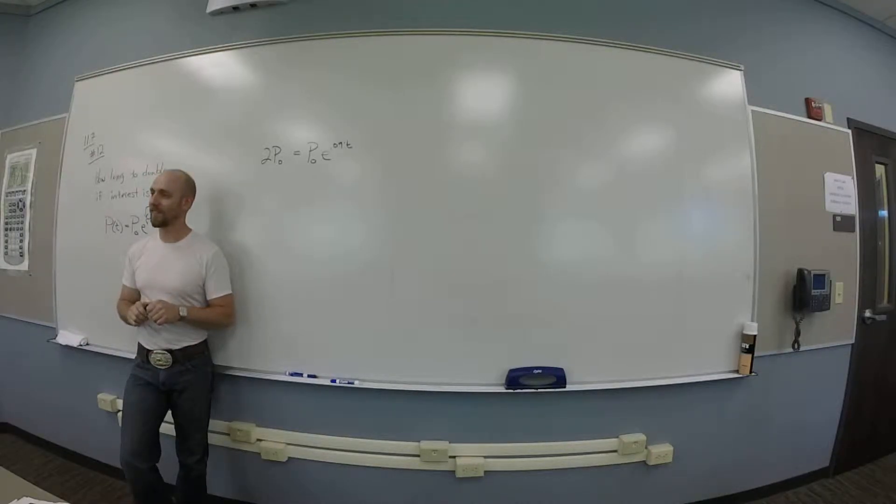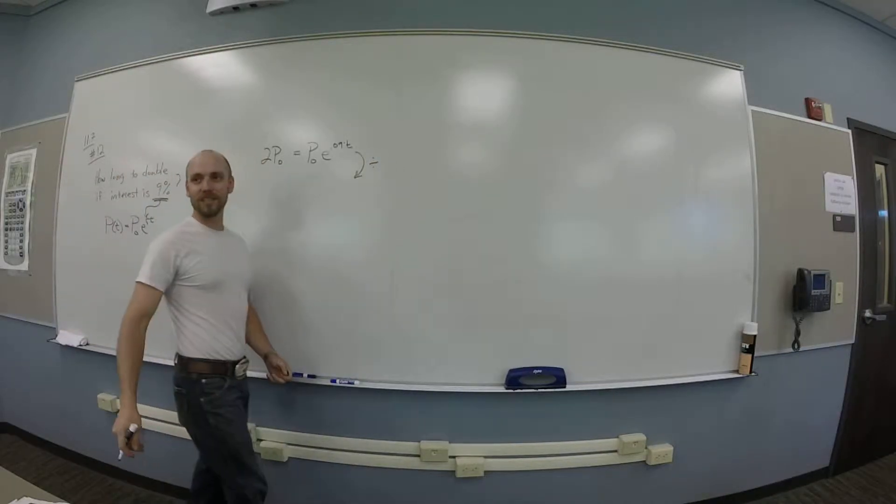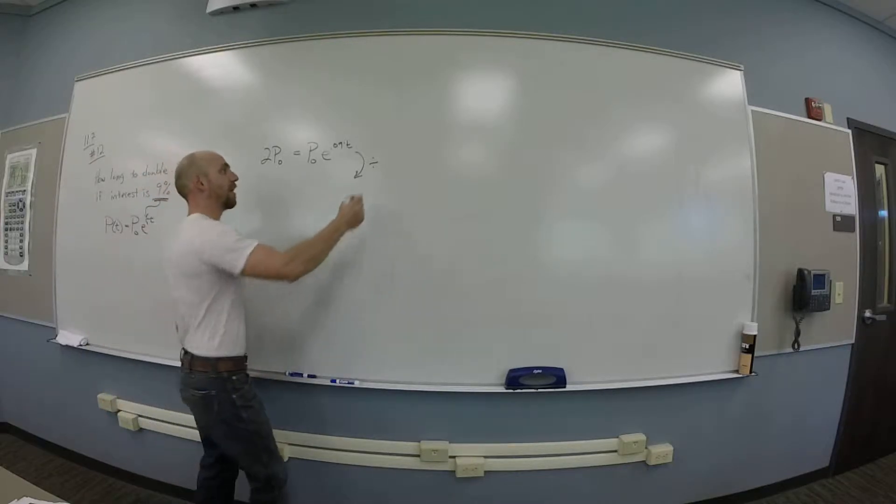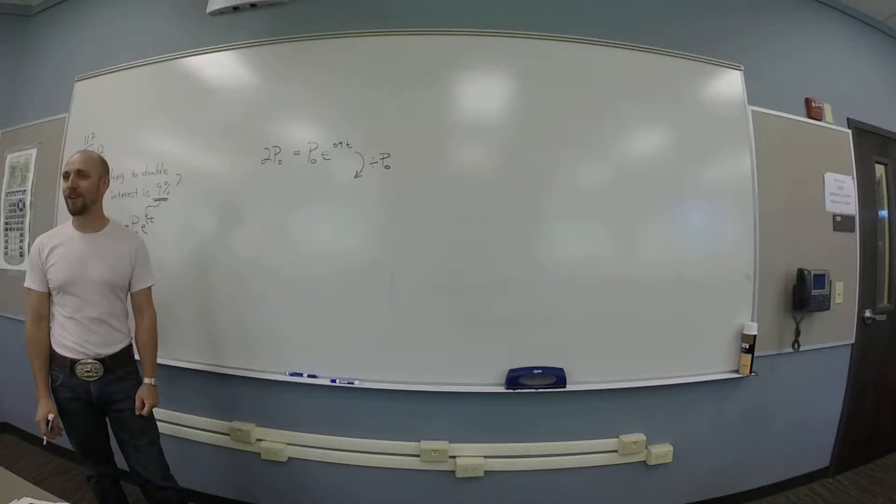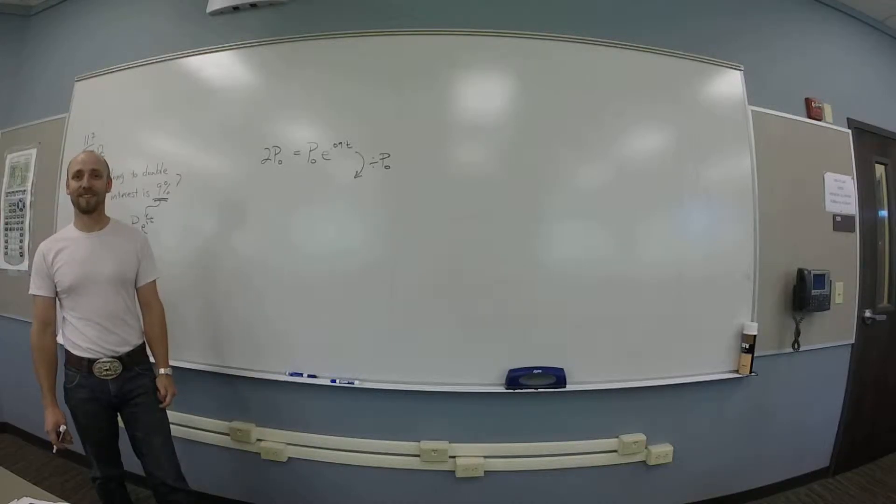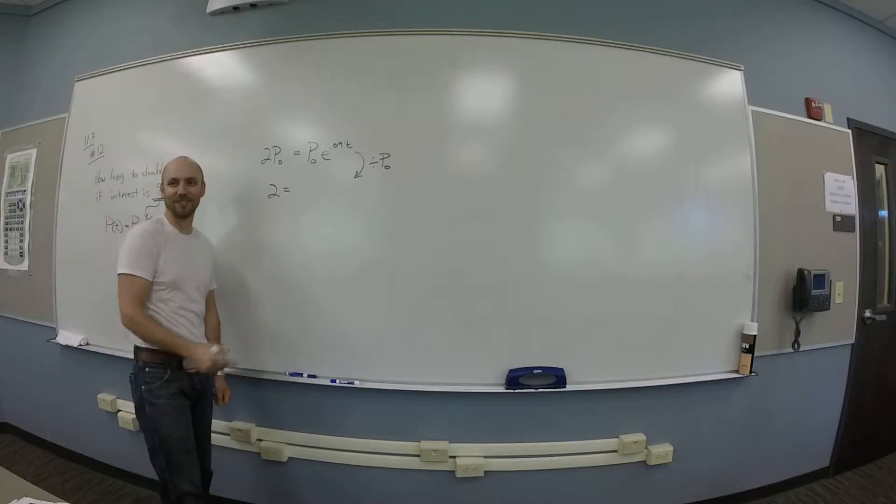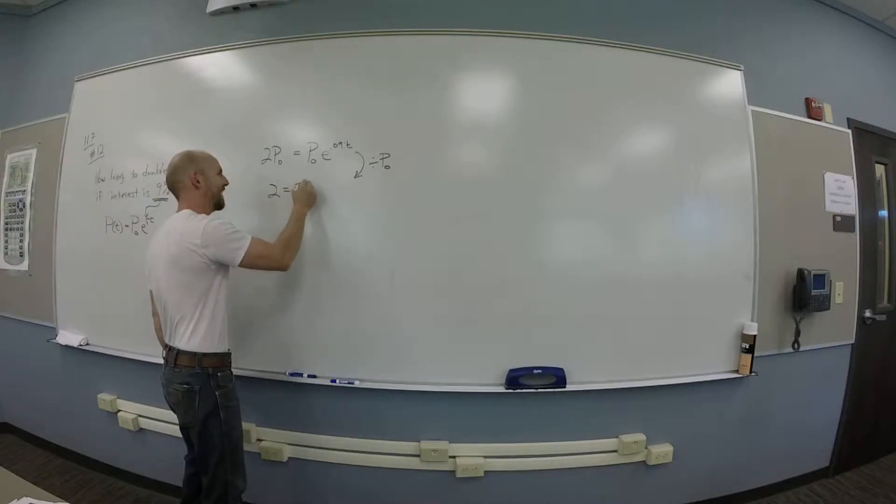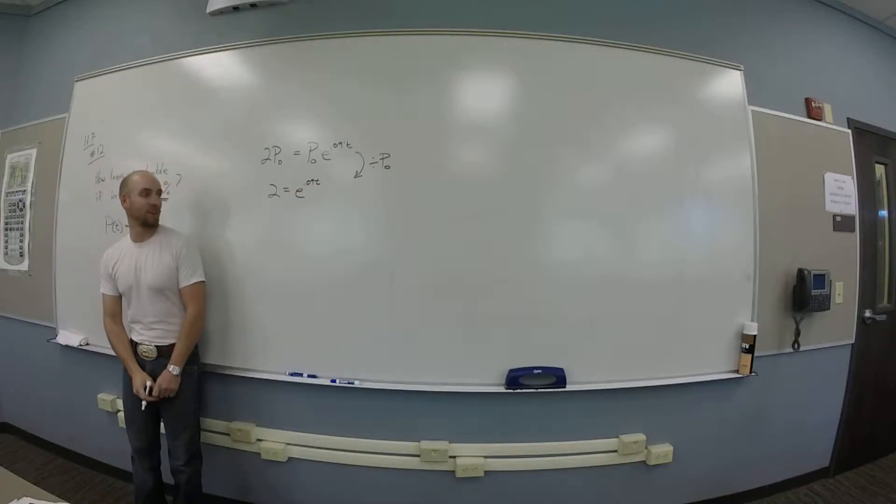So then what? Divide both sides by P naught. P naught. You might wish to spend a second wondering if P naught is zero, right? In which case dividing by zero would be a bad idea. That's telling you that if you invest zero dollars, of course it will never in fact double, right? I got to talk to my financial planner. Okay.